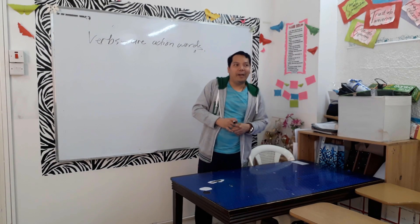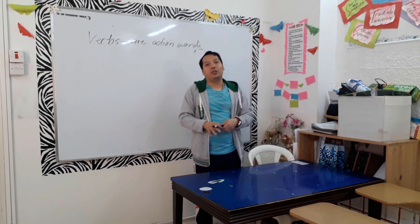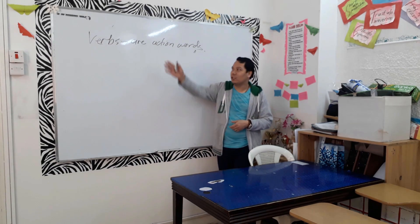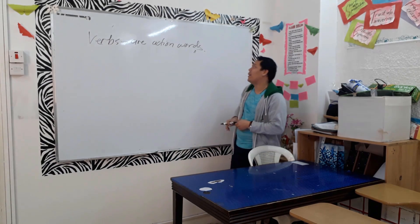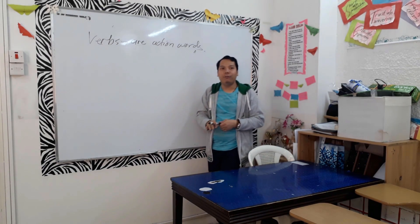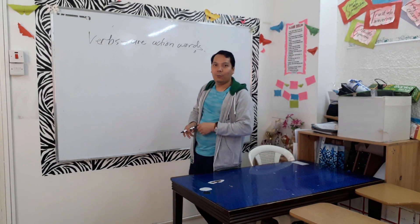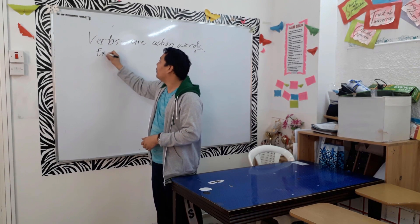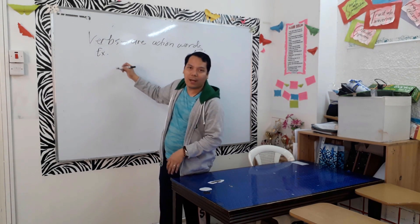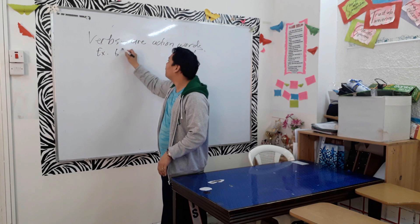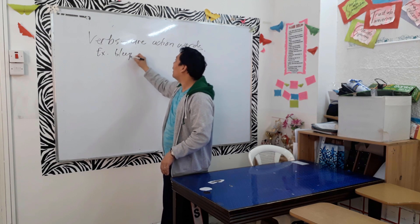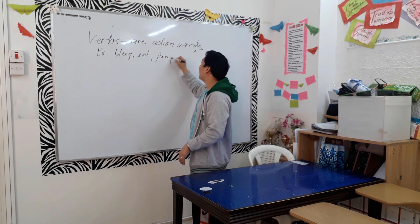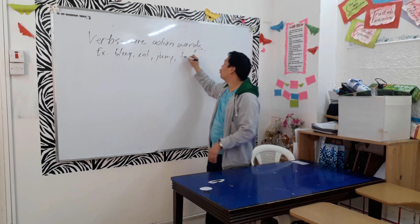Good morning, boys. So today we're going to discuss all about verbs. When we say verbs, it's all about an action or a state of being words. Examples of verbs — when we say action words — are: slip, eat, jump, and chop.